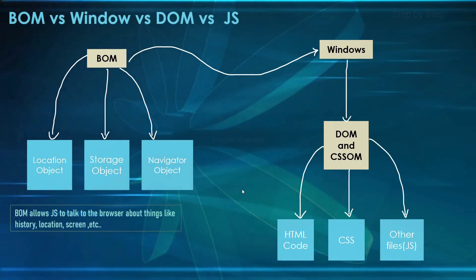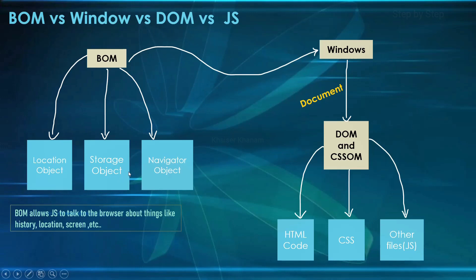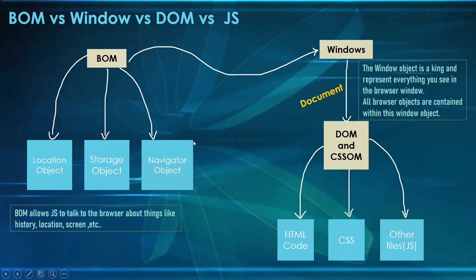So this is very important. Windows will be treated as a king, and inside Windows we have document. In our DOM we can write HTML code, CSS code, and other files as well. BOM will be giving access to all these objects — location object, storage object, navigator object — and using this it allows JavaScript to talk to the browser. I can open separate tabs, close tabs, everything can be performed. But as those are part of BOM, to access them we are going to use the Windows object — window.navigator or directly write navigator. This is how everything will be working together.